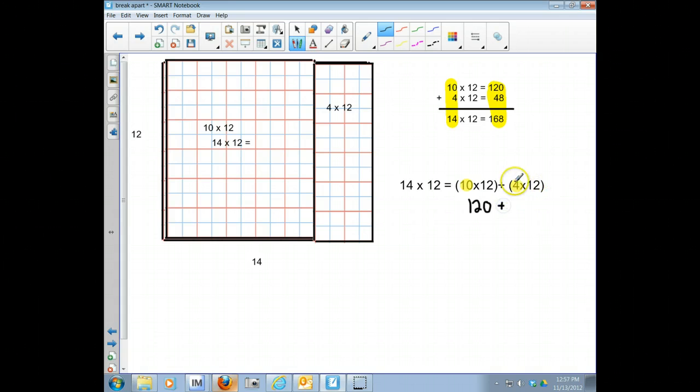Then we can figure out that we have 14 times 12 equals 120 plus 48. So when I put these two numbers together, I get 168, and 14 times 12 equals 168.